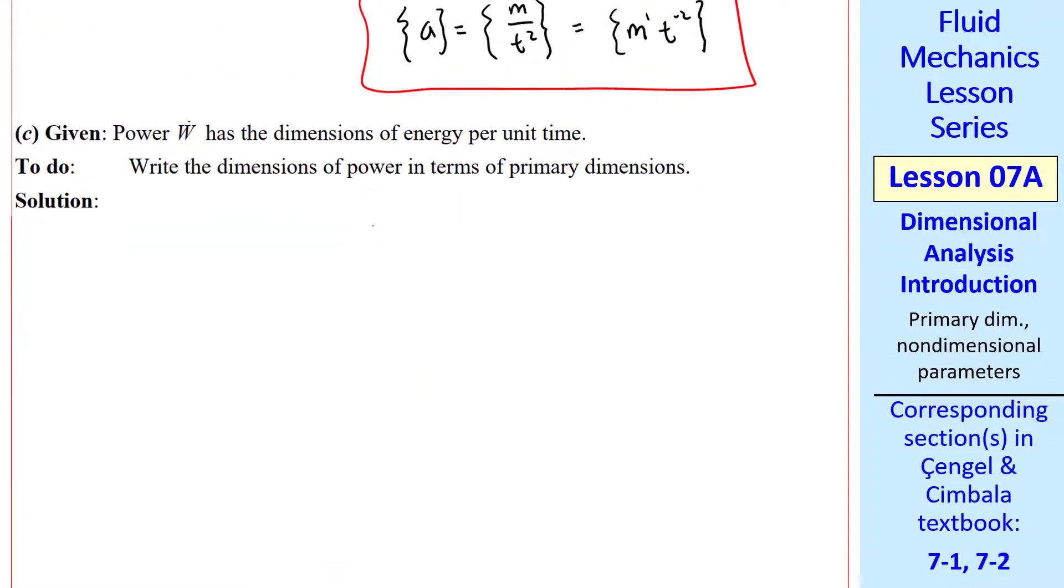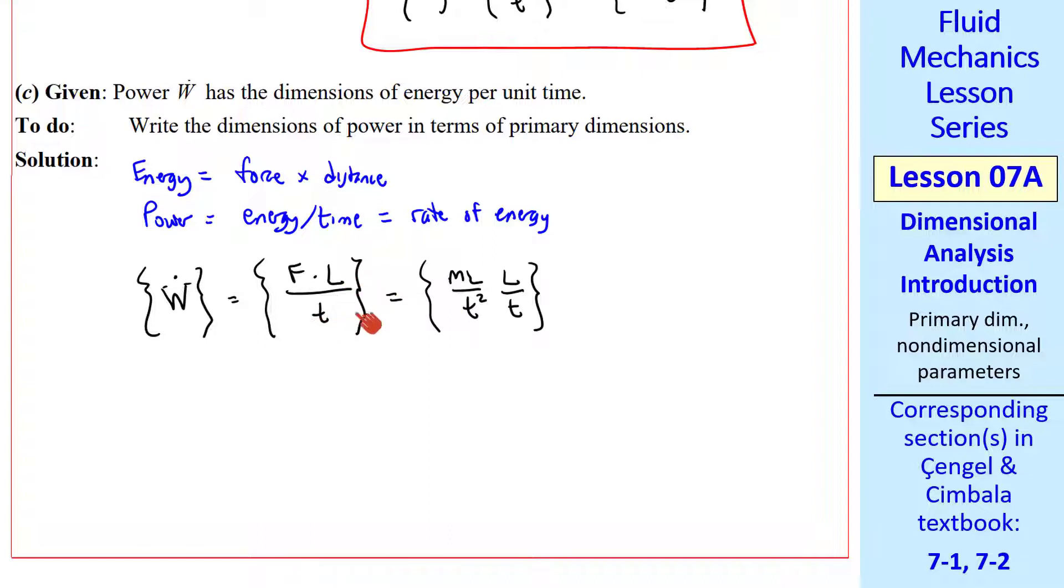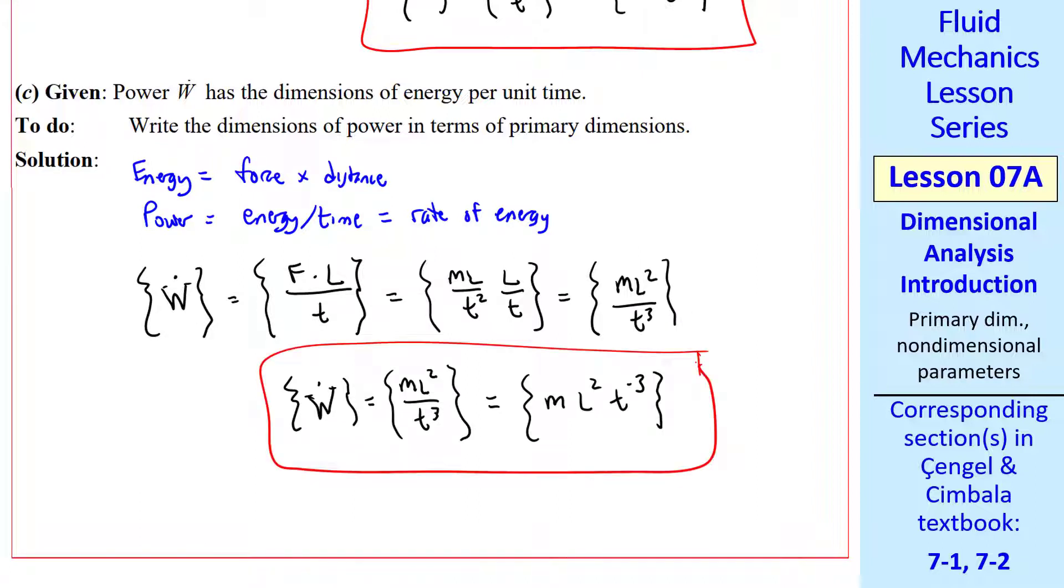Now let's do power. Power has dimensions of energy per unit time. We know that energy is force times distance. We know that power is energy per time, since it's a rate of energy. So the dimensions of power are the dimensions of force times length over time. Again, force has dimensions ML over t squared. Then we have our L and our t, and we combine the L's to get ML squared over t cubed, which we can write like that or like this. So either of those is appropriate as our answer.